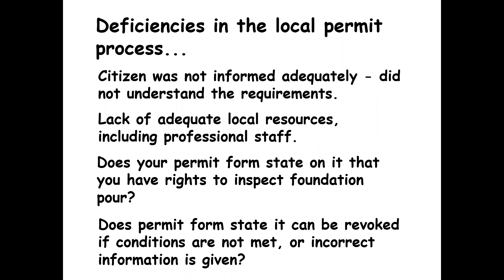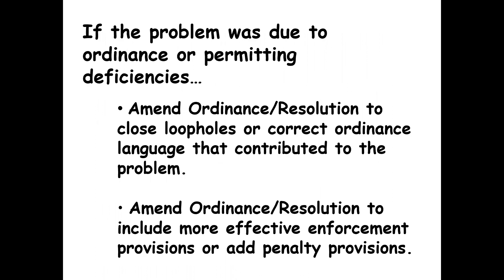A sample permit form will be sent out after this and should function as a checklist to make sure everything will be compliant. Communication between staff and departments can also cause issues — having an inter-office review process is key. If there's a problem with your ordinance or permit, fix it; you may need to amend or adopt a new ordinance. Some communities in Kansas have really outdated ordinances — if it's more than 10 years old, we recommend an update to make sure everything is current with state law. Contact me if you need help with that.